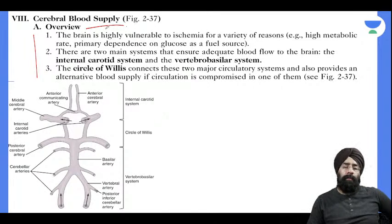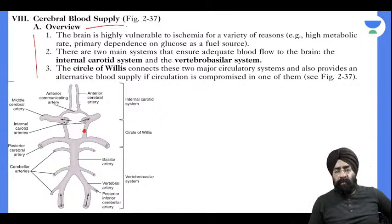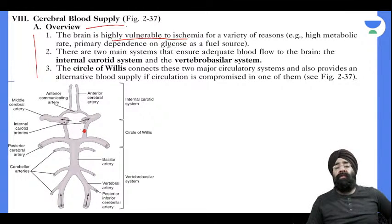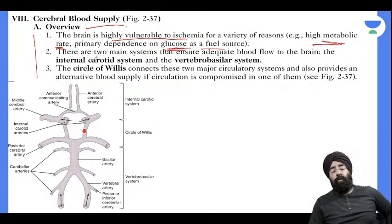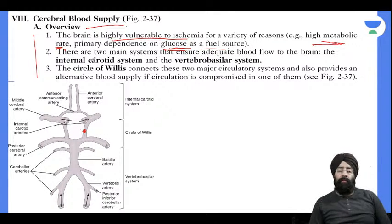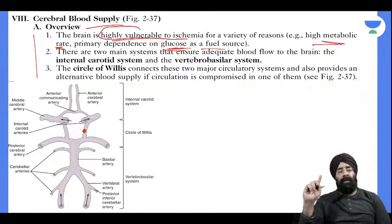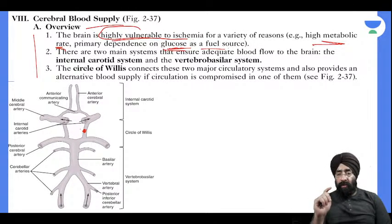Cerebral blood flow is very important because reduced cerebral blood flow causes ischemia to various parts of the brain, leading to various symptoms. It is a very active, primary area which is simply glucose dependent. Please remember that.